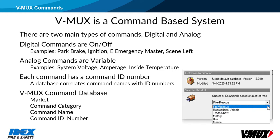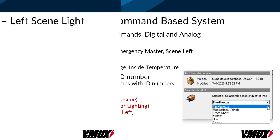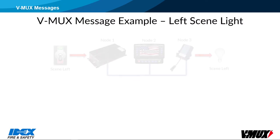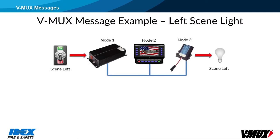The database is further split up into command categories, such as emergency commands, door switches, interior or exterior lighting. Each category has individual related commands with intuitive names. The scene left command is an exterior lighting category, and will be used for our example. The scene left command is ID number 170. The scene left switch is connected to a node 1 input, and the scene left light is connected to a node 3 output.